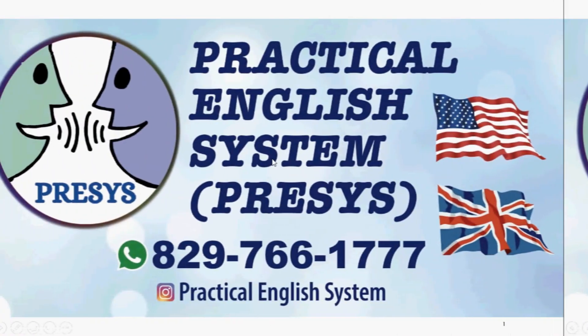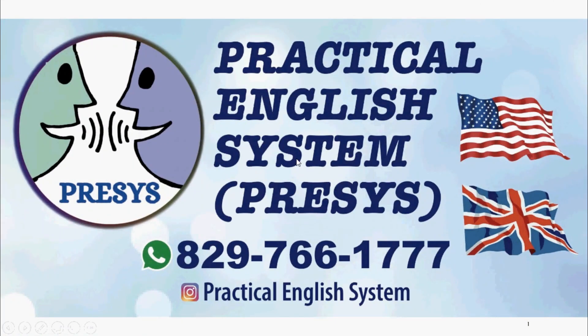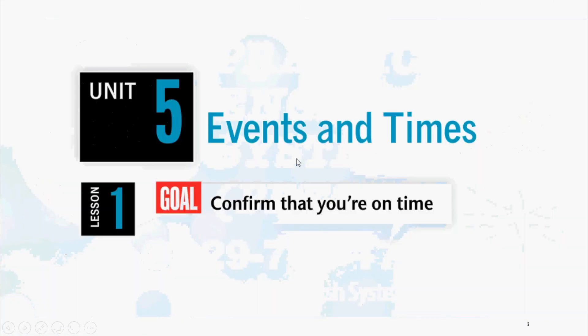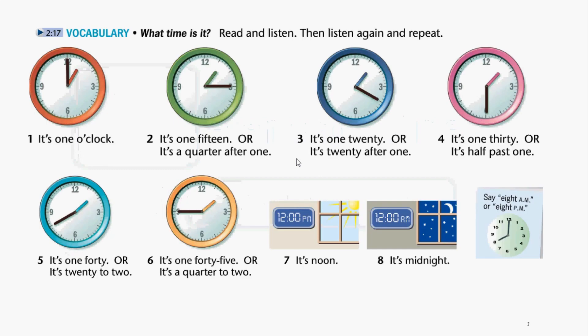Practical English System Presses Unit 5: Events and Times — Confirm that you're on time. Vocabulary, Lesson 1: What time is it?